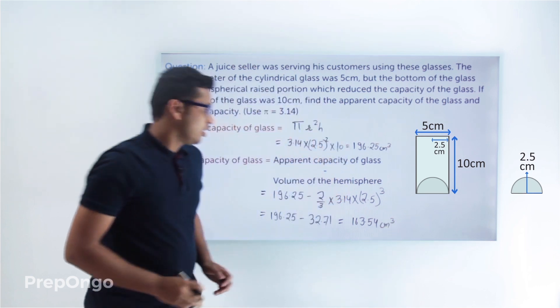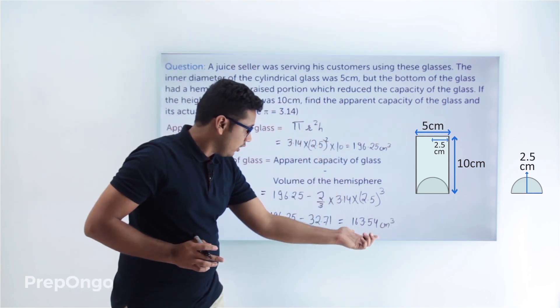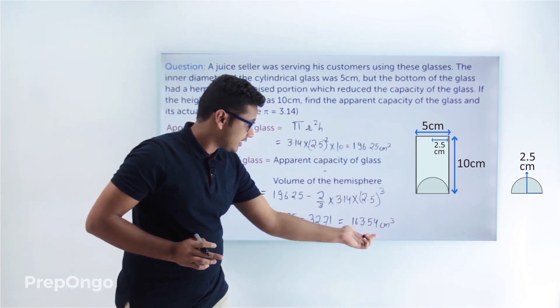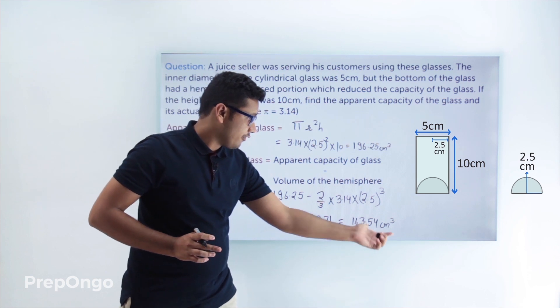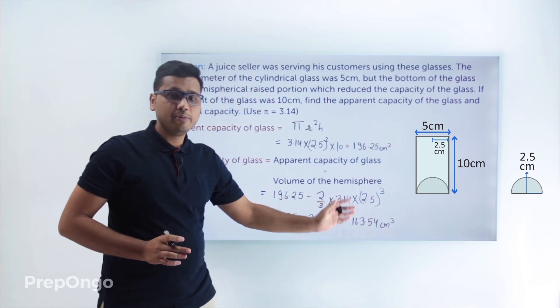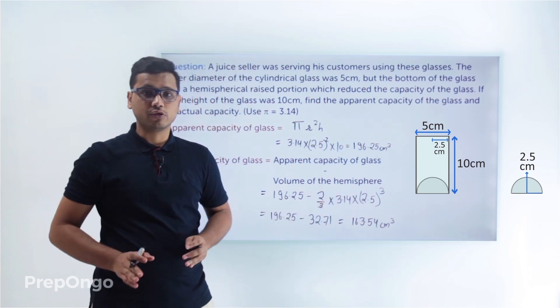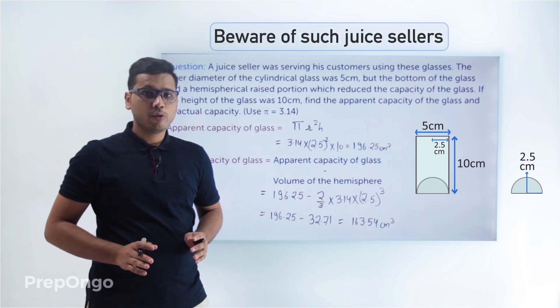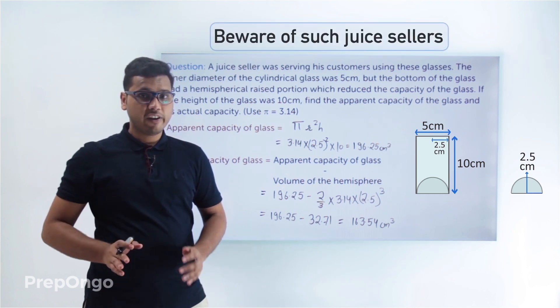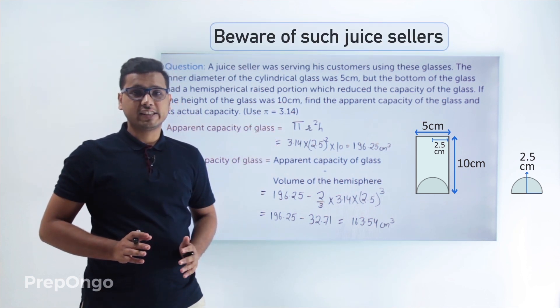So in actual we'll be getting only 163.54 cm³ of juice. So you should be aware of such juice sellers.